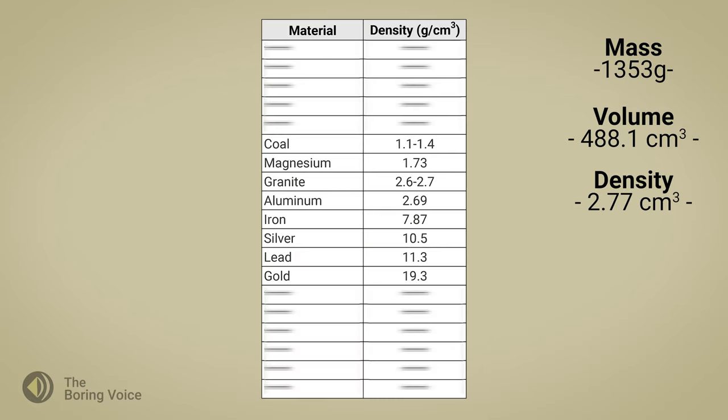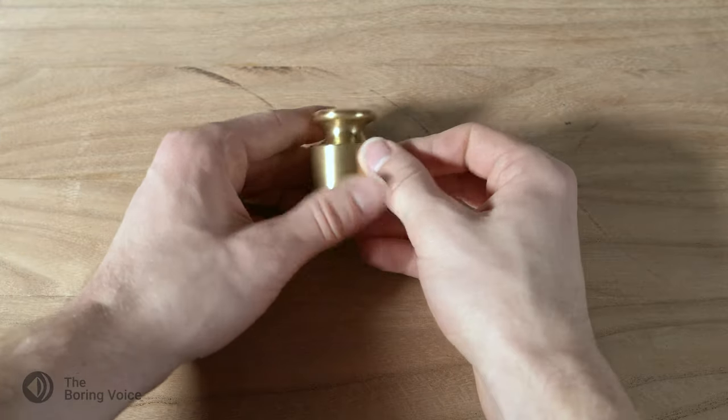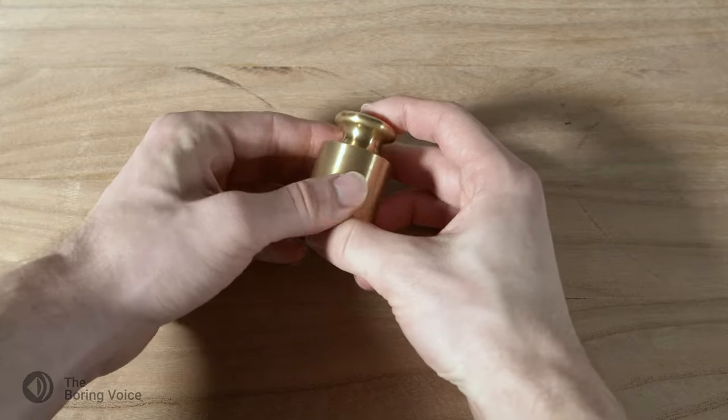Now I can look at a chart of known densities to see if I can identify the type of stone. The density of my piece is within the density range of common granite. Let's do another example, this time with an irregularly shaped object.